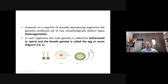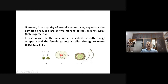However, in a majority of sexually reproducing organisms, the gametes produced are of two morphologically distinct types — what we call heterogametes. Homo means similar, hetero means dissimilar. In such organisms, the male gamete is called antherozoid — this is in case of plants — or sperm. The female gamete is called egg or ovum. We use the term antherozoid or sperm in case of plants, and only sperm in case of animals.